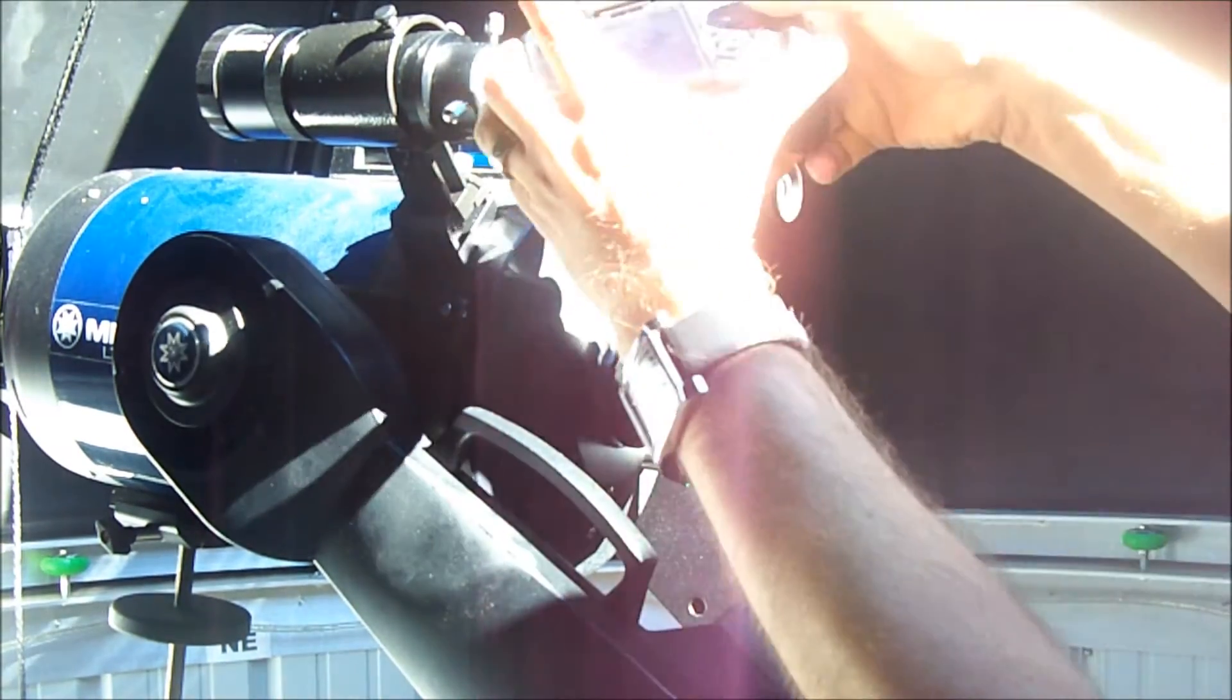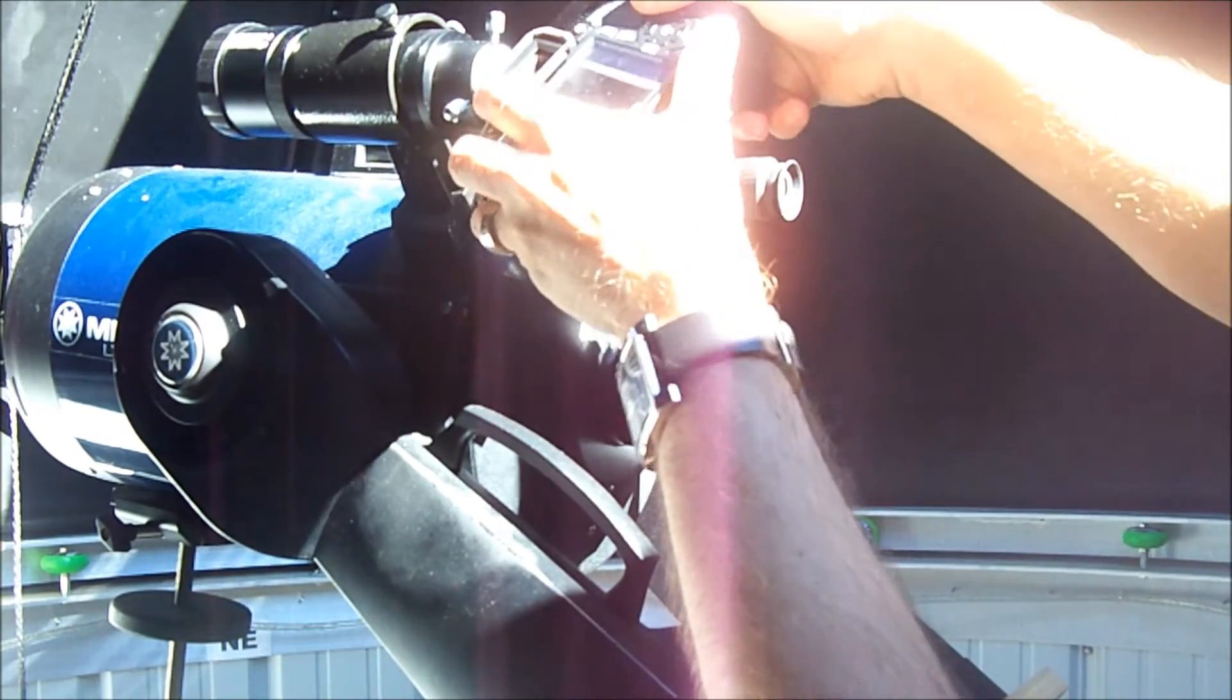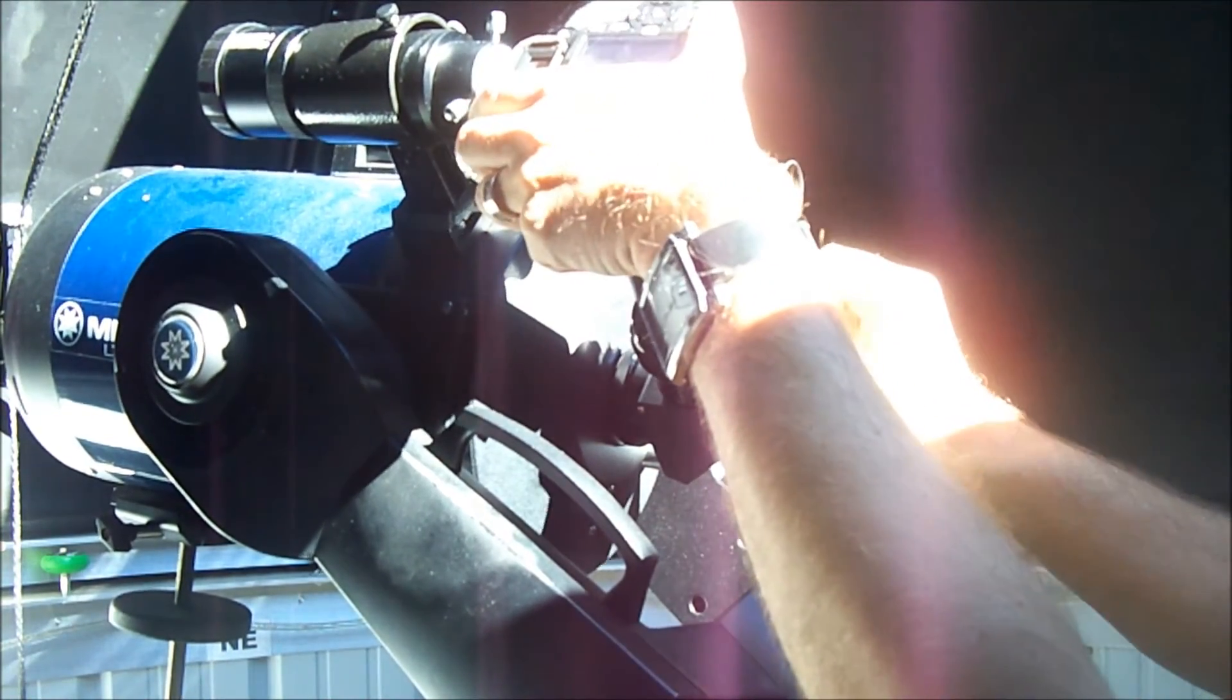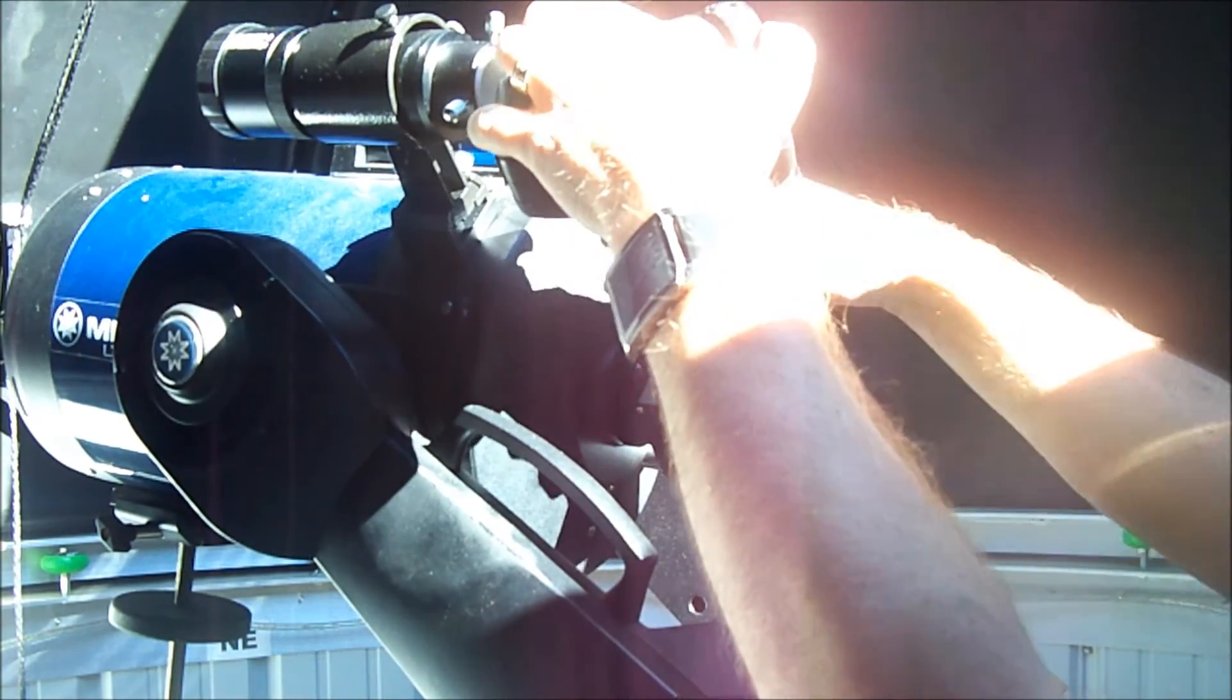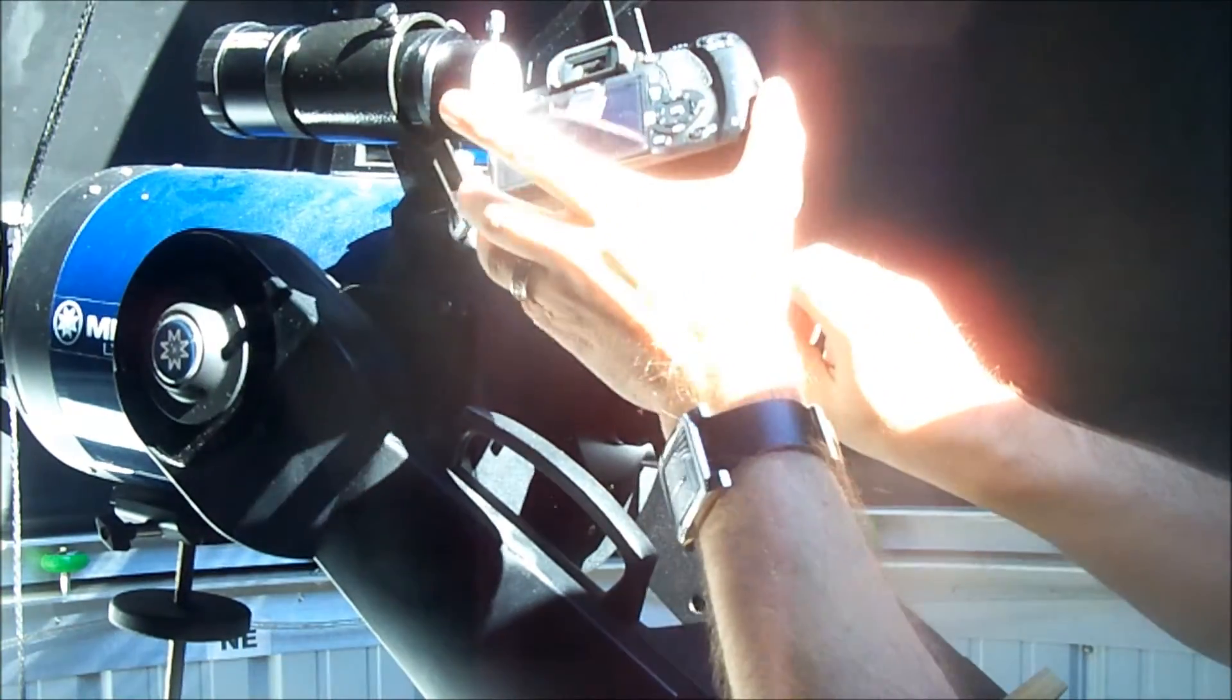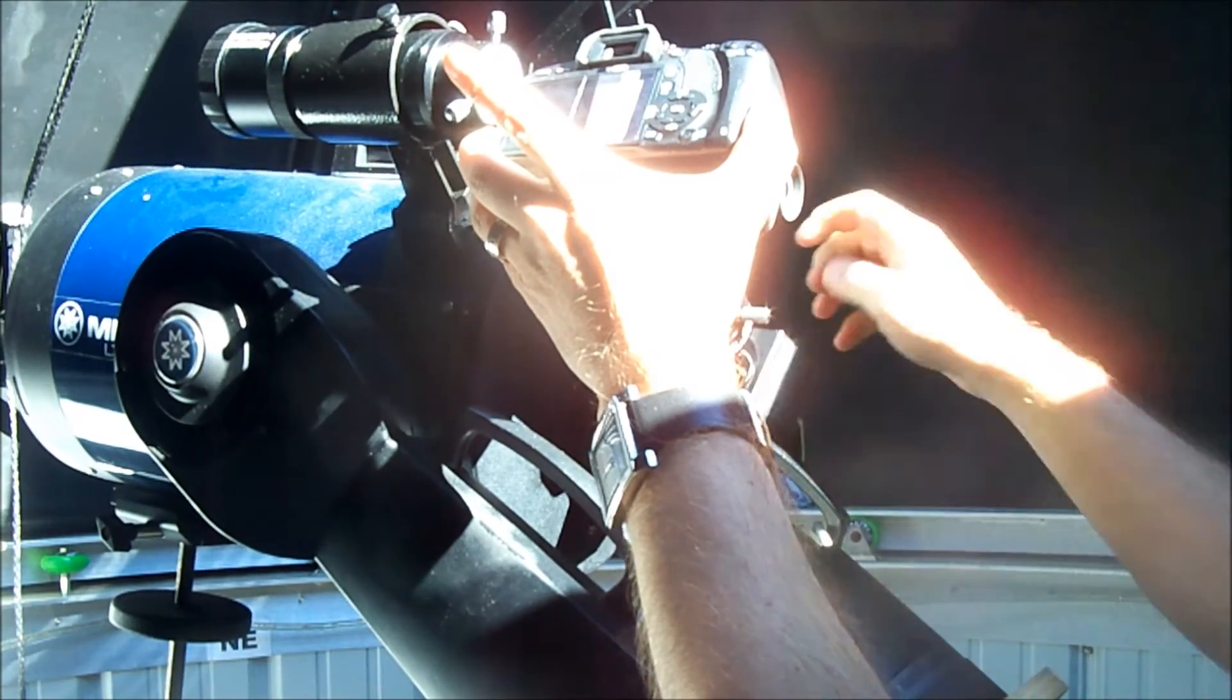Once the assembly is all put together, you place the whole thing into your diagonal, or directly into the visual back of your telescope. Make sure that everything is secured tightly and the camera is in the orientation that you'd like your image to be displayed in.